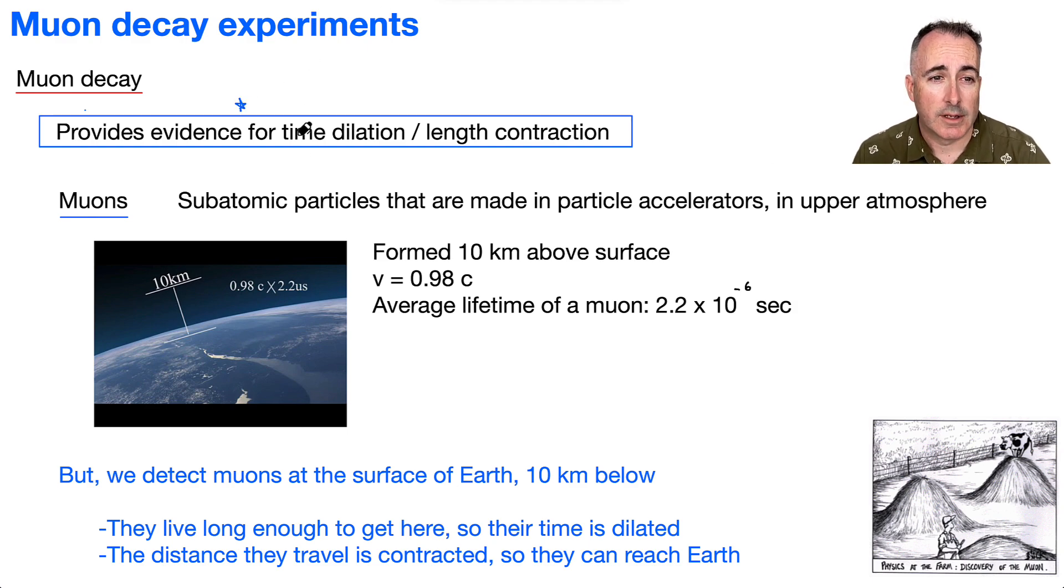So what are muons? Muons are subatomic particles. In fact, they're called leptons. Those are made in particle accelerators, sure, but they're also made in Earth's upper atmosphere. Just naturally, they form.